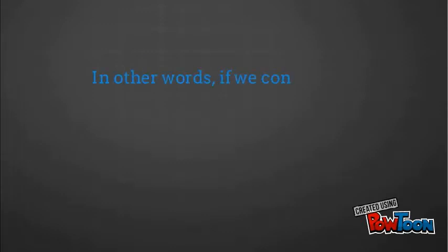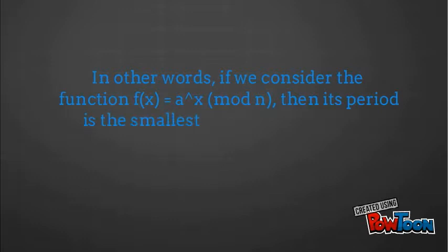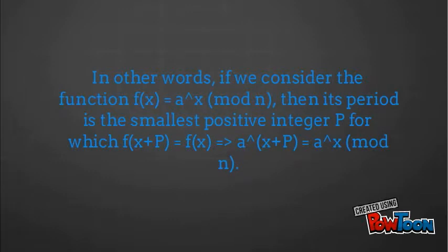In other words, if we consider the function f of x equals a to the power x mod n, then its period is the smallest positive integer p for which f of x plus p equals f of x, which implies that a to the power x plus p is congruent to a to the power x mod n.